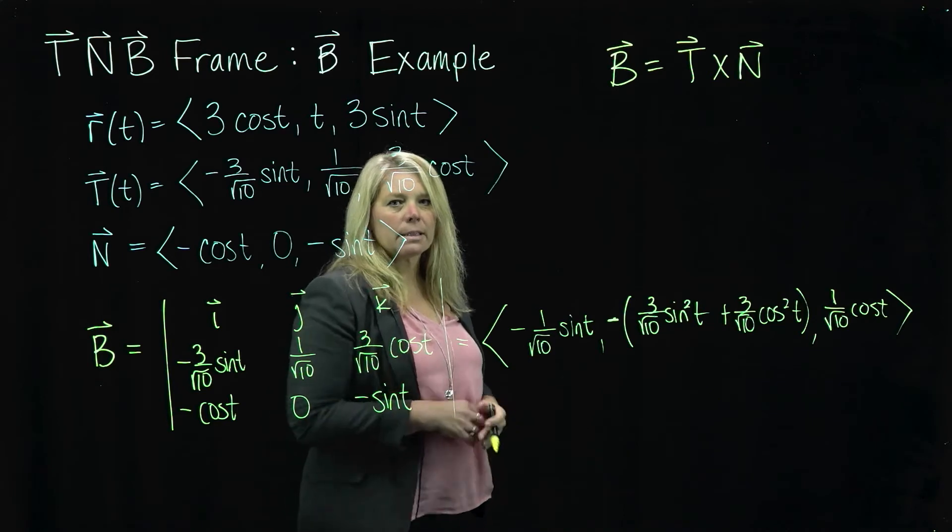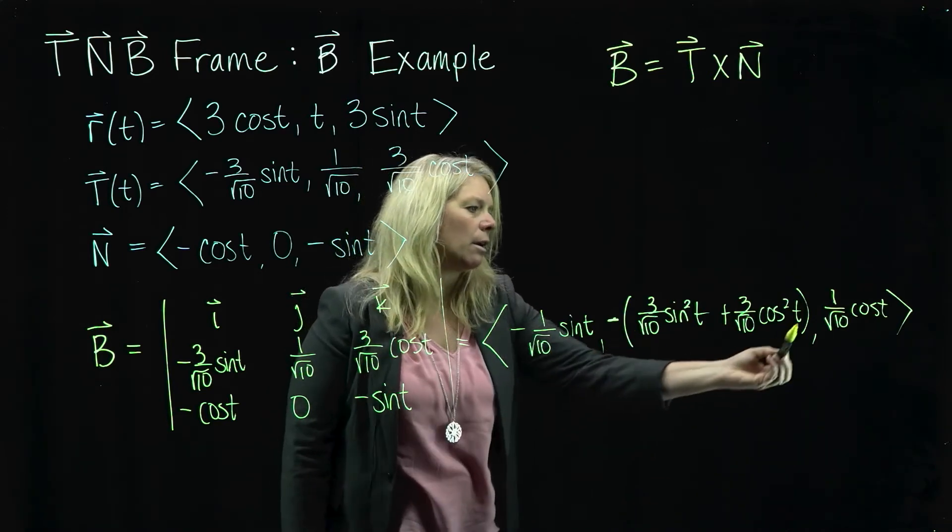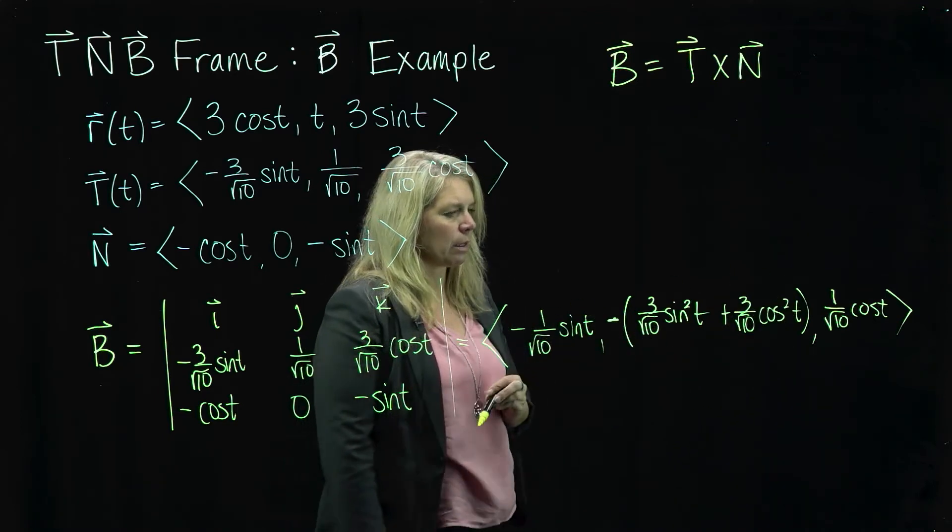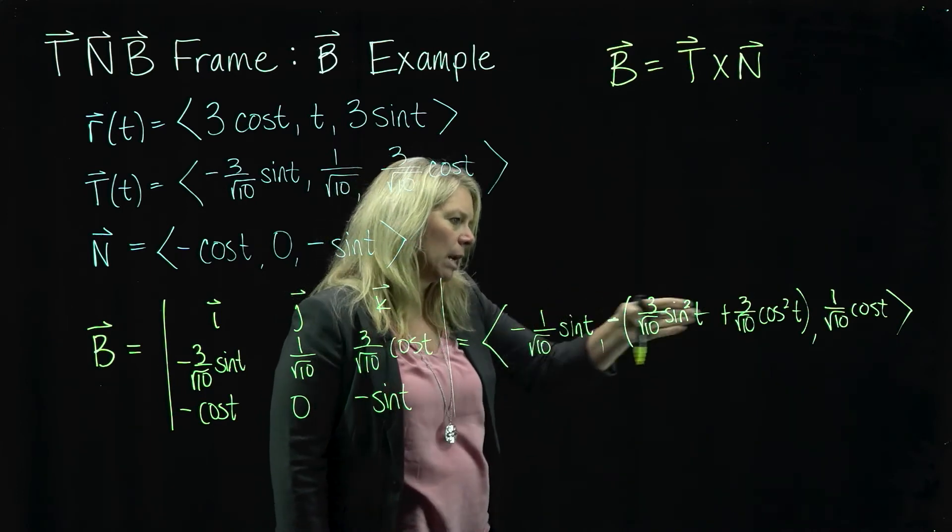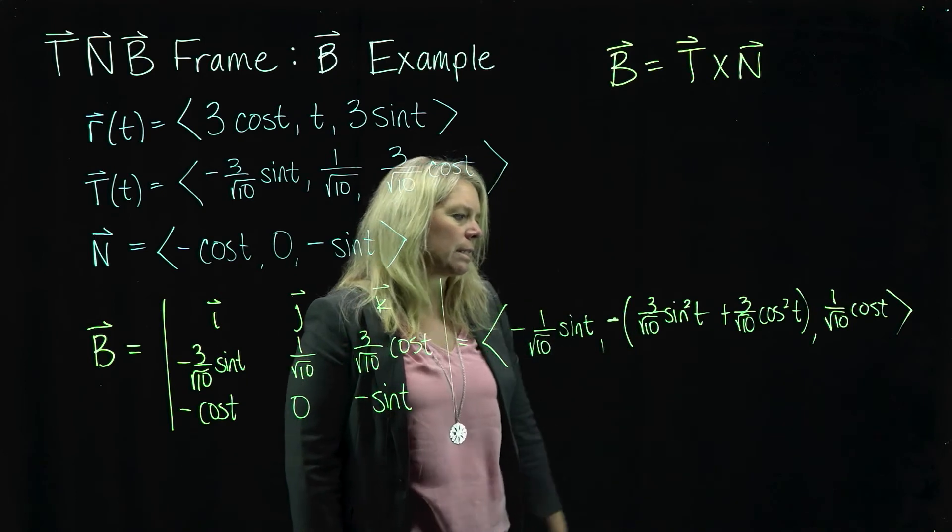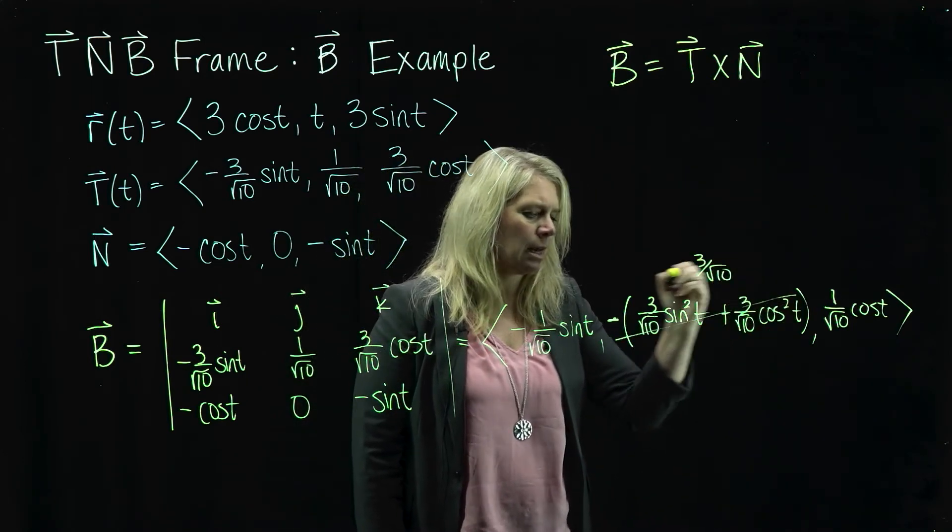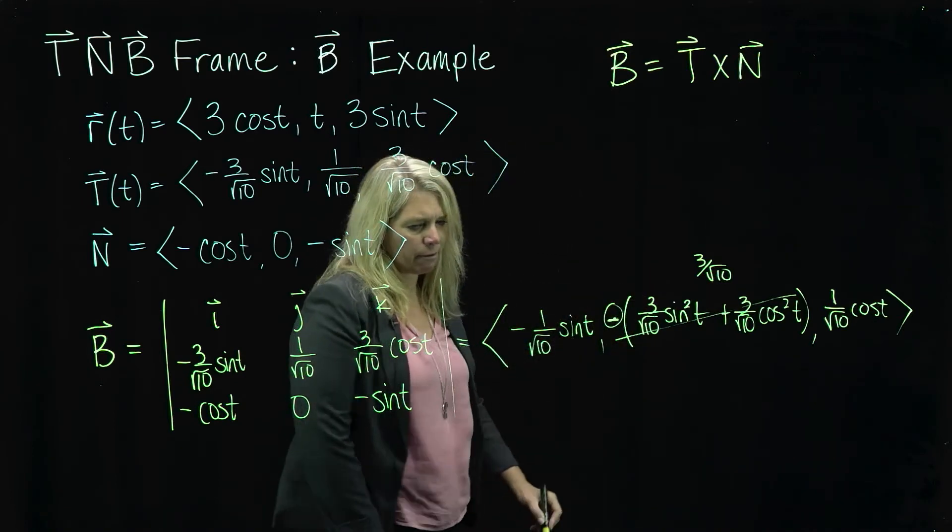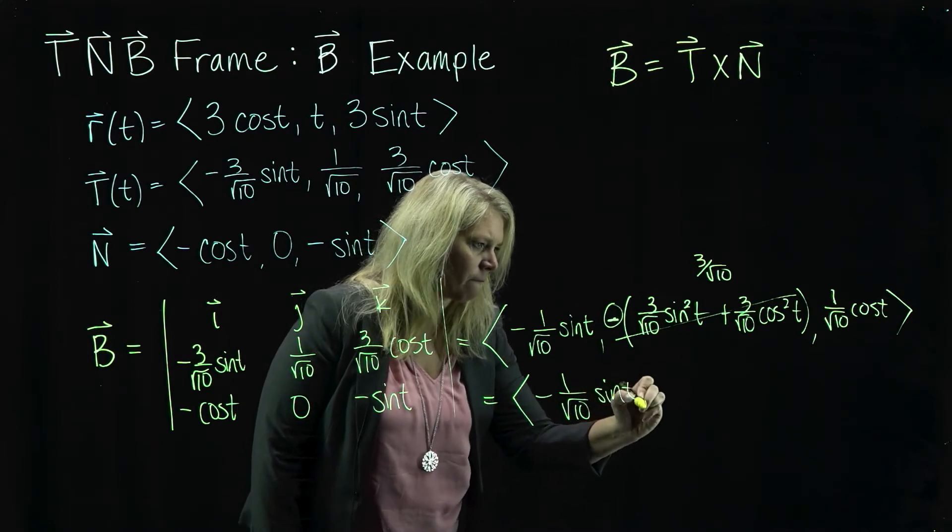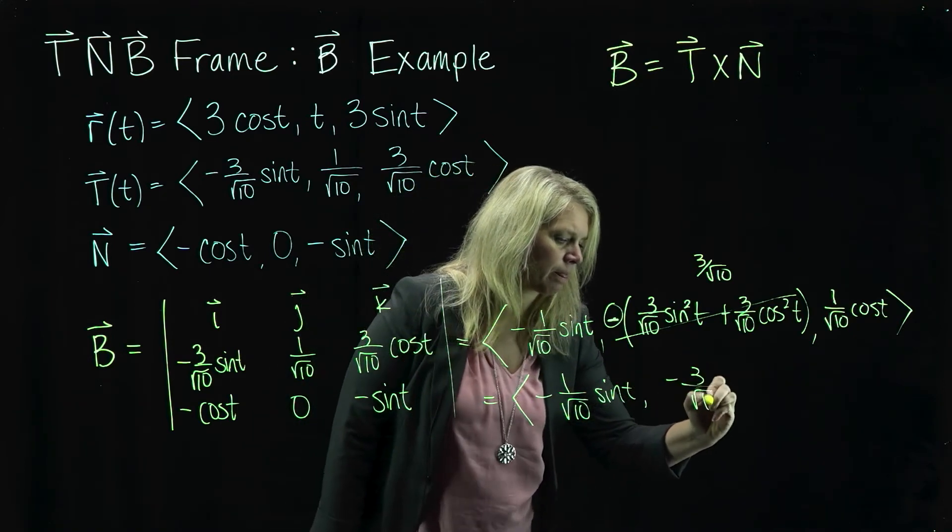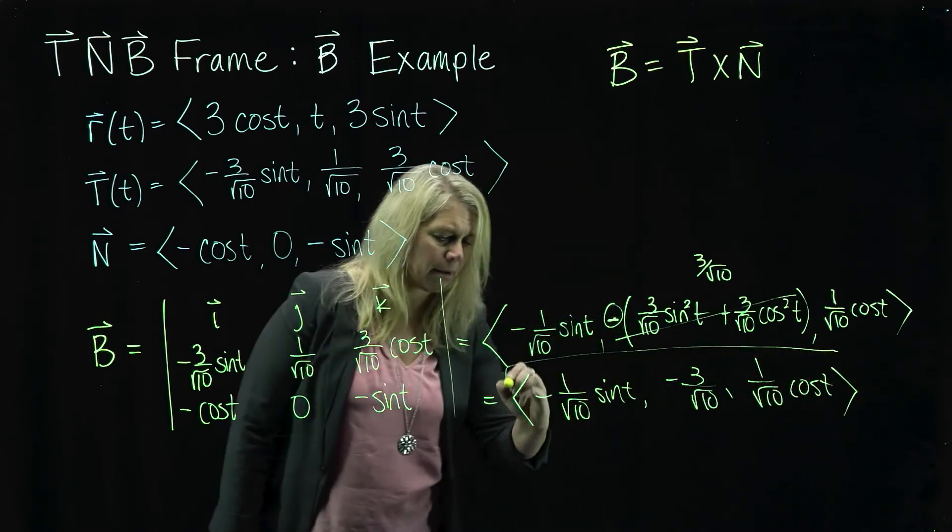Okay. As with many of the examples we've worked on, Pythagorean identity just keeps popping up. So you might notice that we have that going on here in the J component of my vector. So I'm going to go ahead and factor out the 3 square root of 10. And then what I'm left with, 3 over square root of 10, what I'm left with is that Pythagorean identity. So all of this here simplifies to 3 over square root 10. And don't forget the minus sign out front. Let me clean that up for my answer here. All right. So there is my B vector.